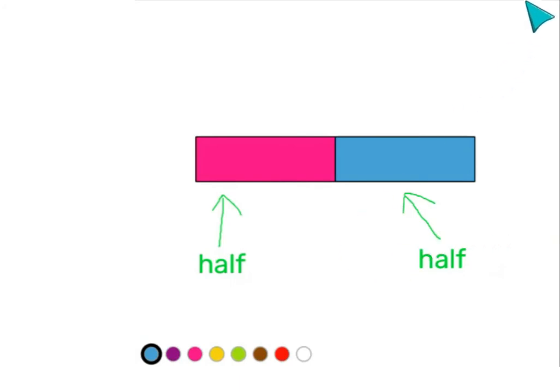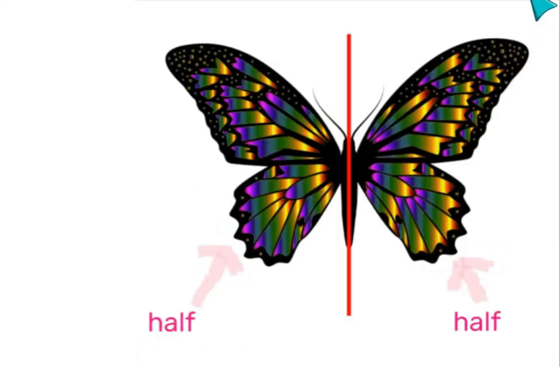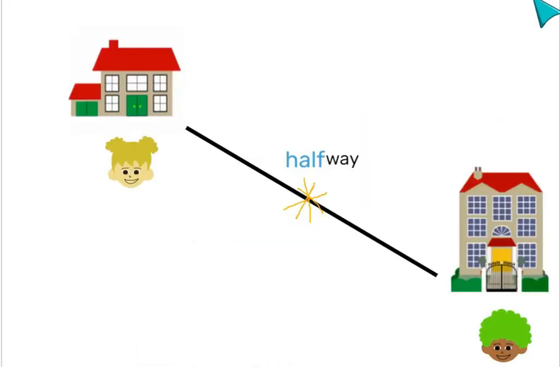This is a rectangle split in half. We can see two halves of a butterfly. We can even meet a friend halfway for a play date, which means each person walks the same distance.